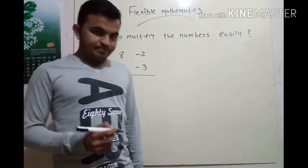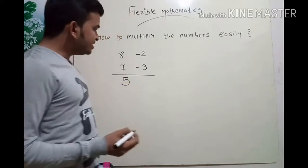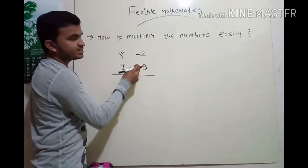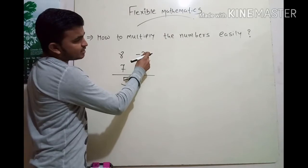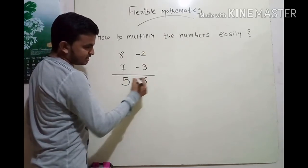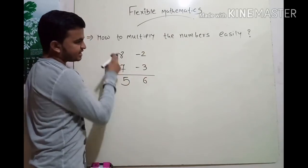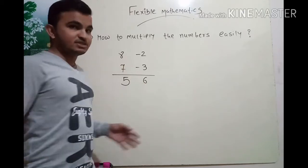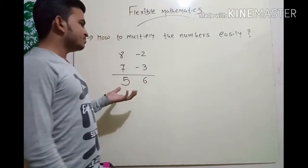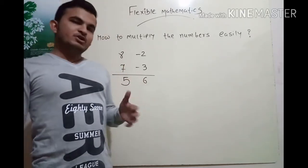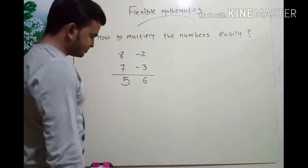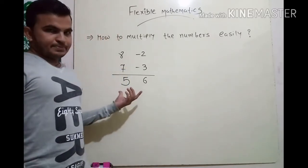Now what is the next step? The next step is to multiply these two deficit numbers, ignoring the other side. So here you get 2 threes are 6. So the answer is 56 — 8 sevens are 56. That is our answer. I explained this basic example because you are going to learn a harder one, so this was the easier case.